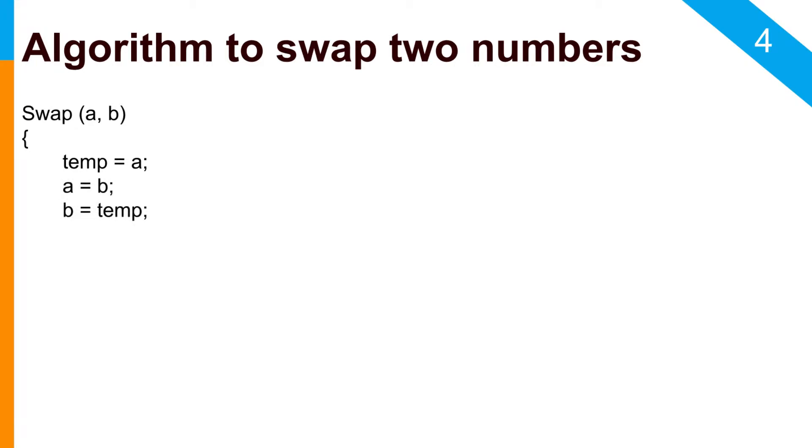Finally, you will assign the temporary variable where you have the value of A and you will assign it to B. Then you will finally use the parenthesis to close your function or write your end statement. This is one way of writing your algorithm.